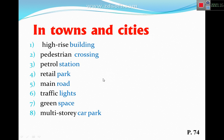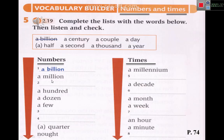I gave you this — please write down like that, try to continue. In towns and cities, page 74, write the words like that. The new lesson is about numbers and times. Now let's complete the lists with the words below, then listen and check — let's do it together first.